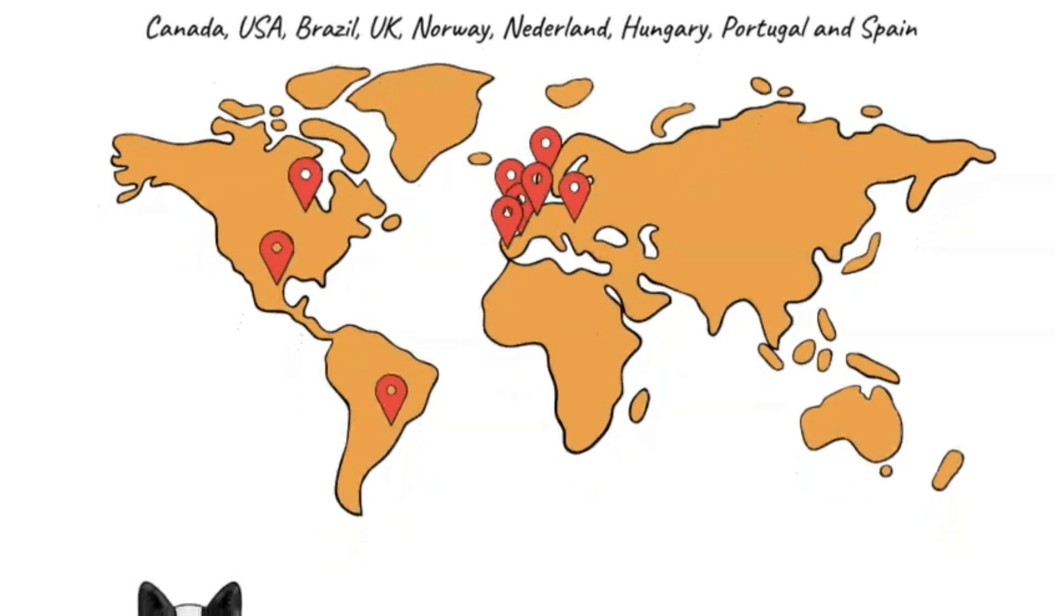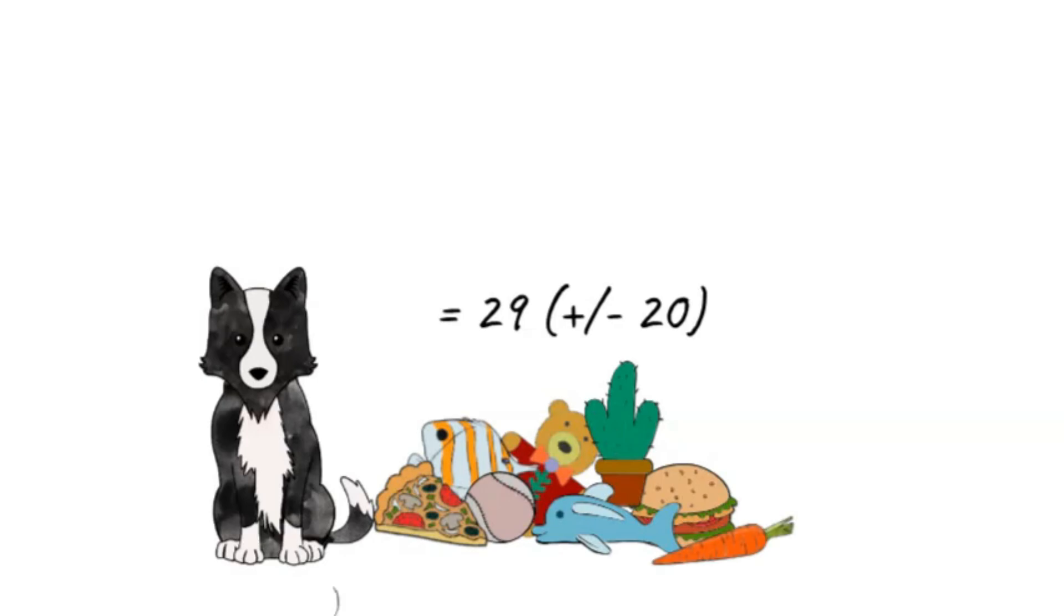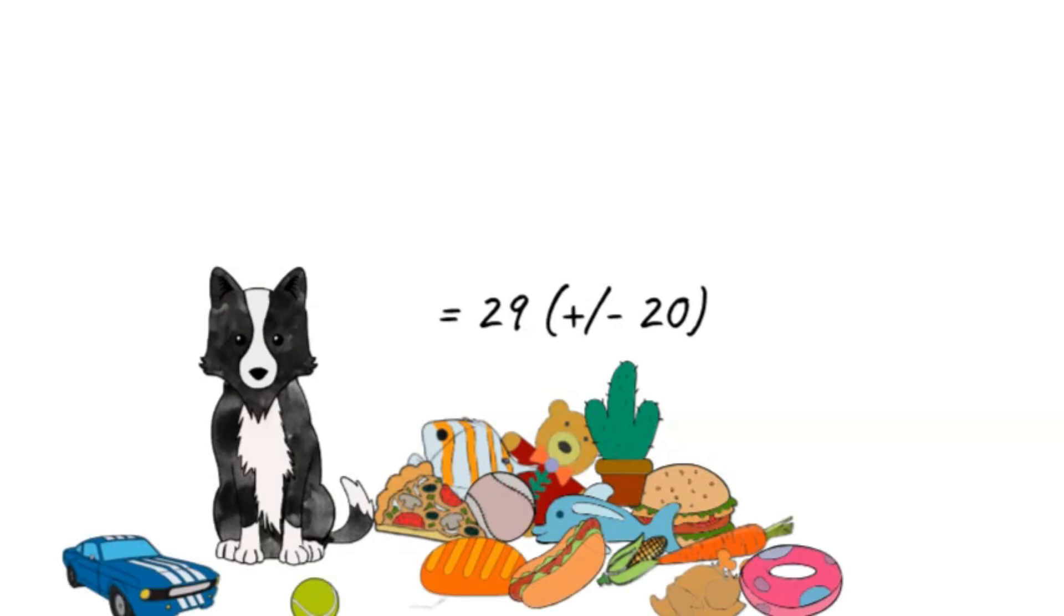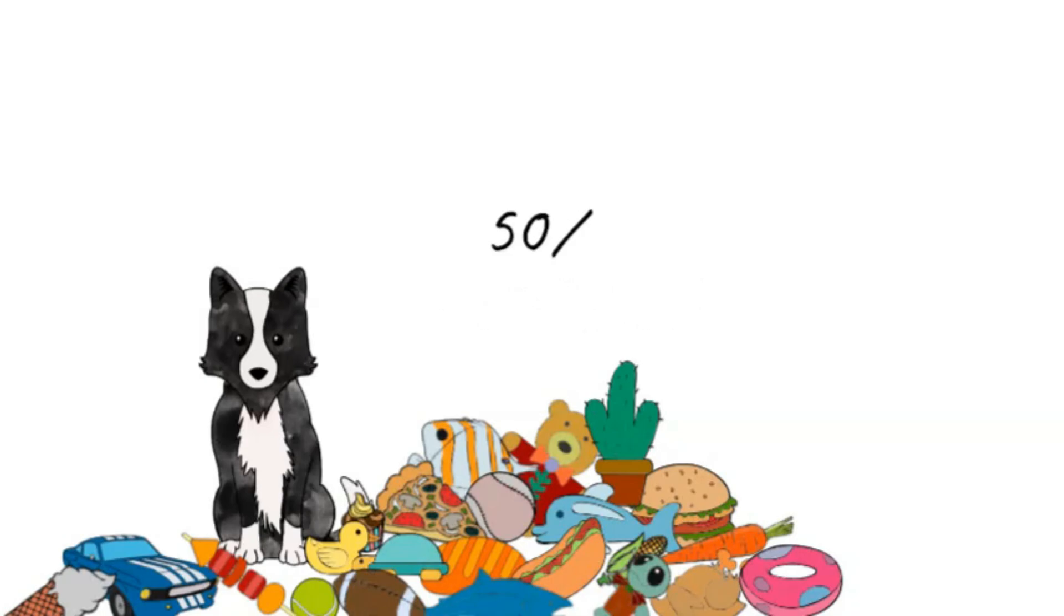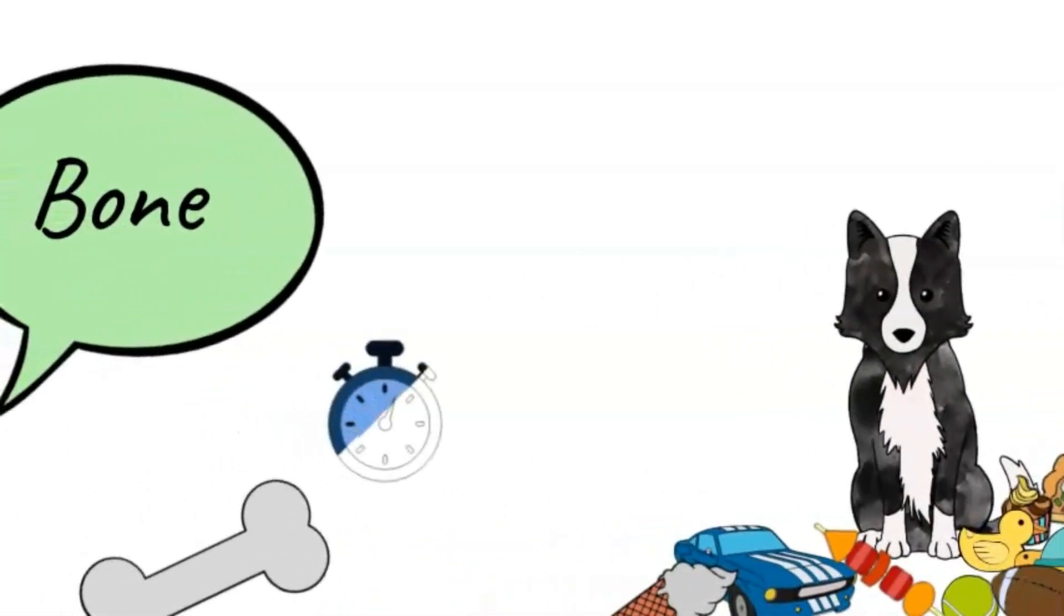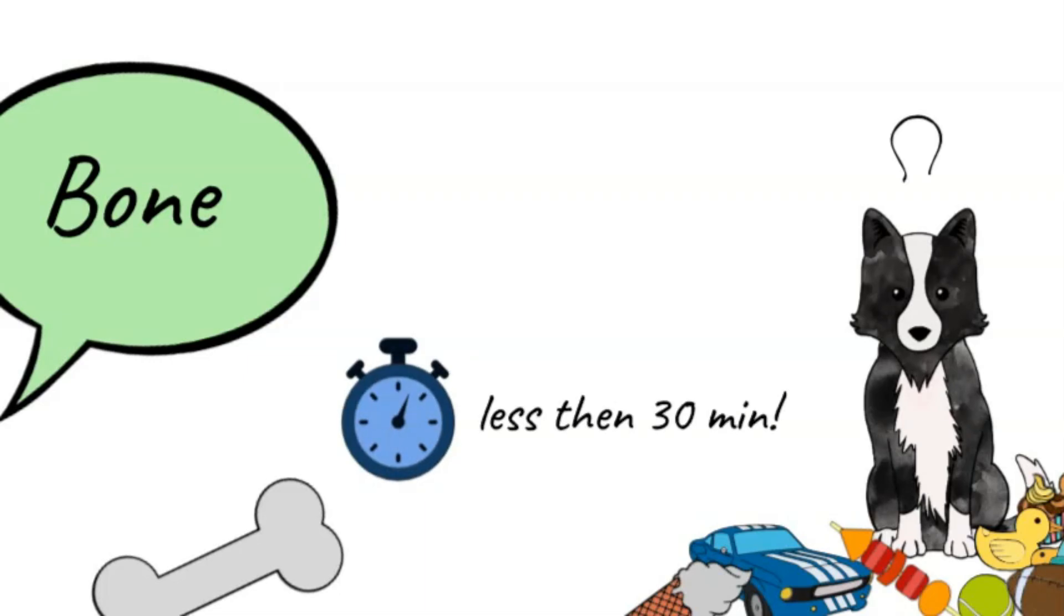On average, the dogs knew 29 toy names. However, gifted word learner dogs learn new object names very fast, and by the time the study was published, 50% of the owners reported that their dogs had already learned over 100 toy names. The owners estimated that their dogs can learn a new toy name in a matter of minutes.